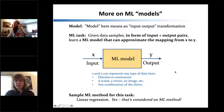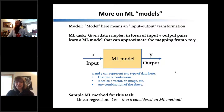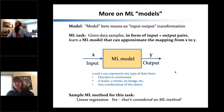Usually there's an input-output pair, which we also call supervised learning. The x and the y can represent any type of data — each one can be a scalar, a vector, an image, a time series, or any combination of the above.